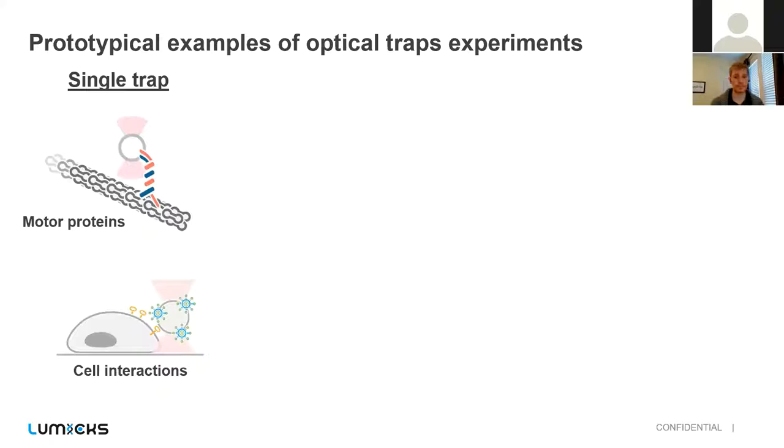So let's talk about just some basic examples of what you would use optical traps for in case you've never seen this technology. So if we look at the case of a single trap, you can do things like conjugating a motor protein to that bead and observe that motor protein as it walks across some sort of cytoskeletal filament. Or maybe you're interested in cellular interactions, so you could coat a bead with viral particles, you could bring that bead into contact with the cell and pull on it, and using our fluorescence, maybe see how cellular signaling changes.